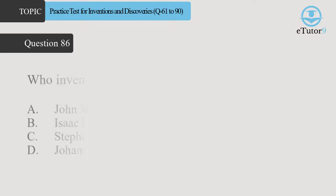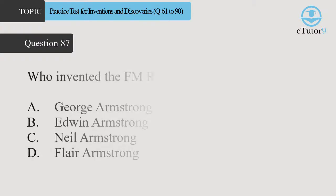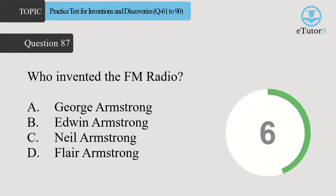Question 86. Who invented the printing press? Answer is D. Johannes Gutenberg. Question 87. Who invented the FM radio? Answer is B. Edwin Armstrong.